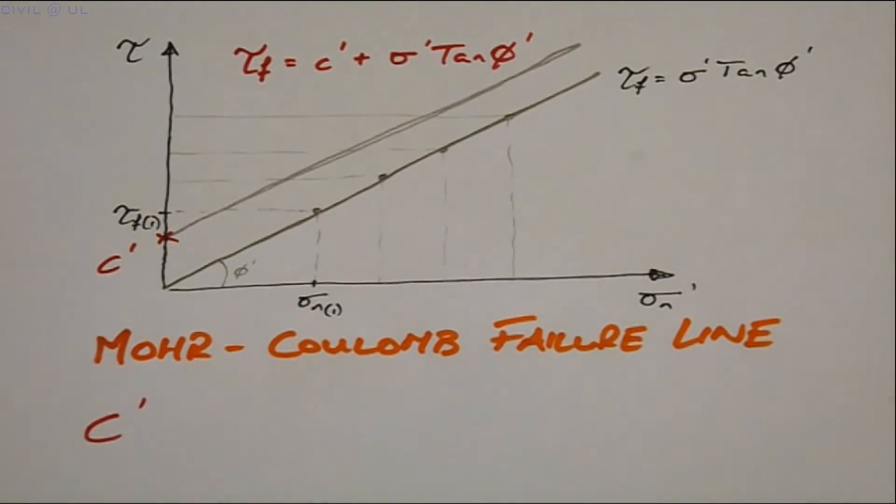The C dash term is the subject of much debate. In the past, it has been referred to as the cohesion, or an inherent bond between soil particles. And while such bonds are exhibited in clays, their magnitude tends to be of little significance.